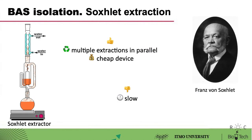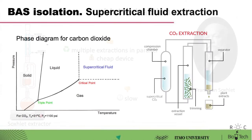The first attempts to automate the extraction process date back several millennia, but the truly successful attempt belongs to the German agricultural chemist Franz von Soxhlet, whose team designed the device that now bears his name — the Soxhlet apparatus. The Soxhlet method is still a relevant extraction method that does not require expensive equipment.